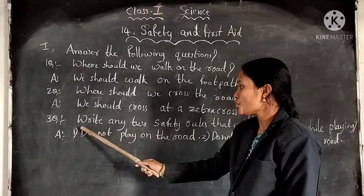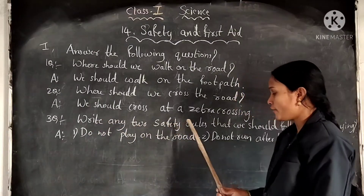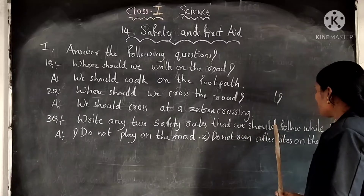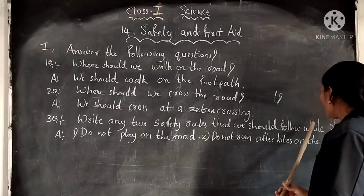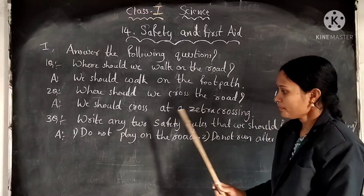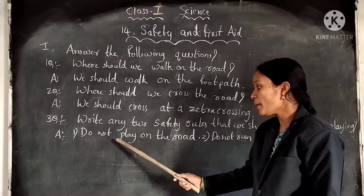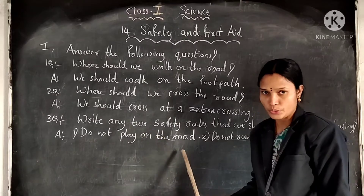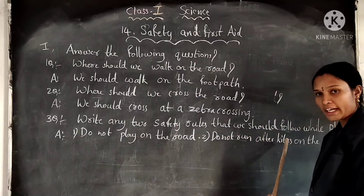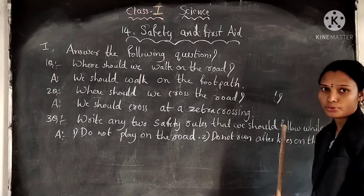Third question: write any two safety rules that we should follow while playing. Answer: do not play on the road, and do not run after kites on the road.